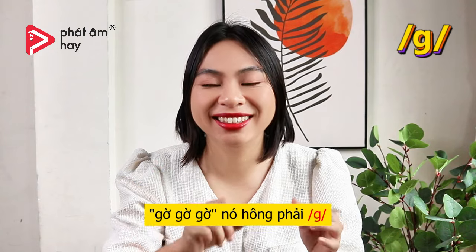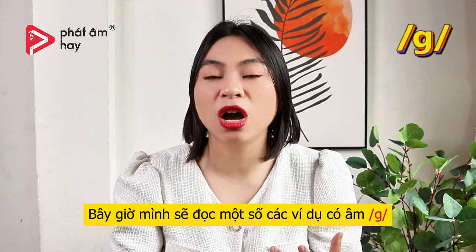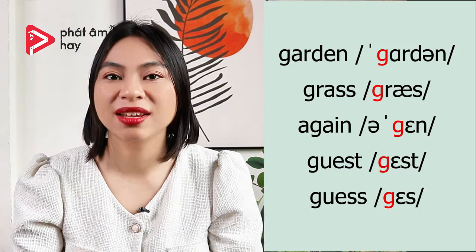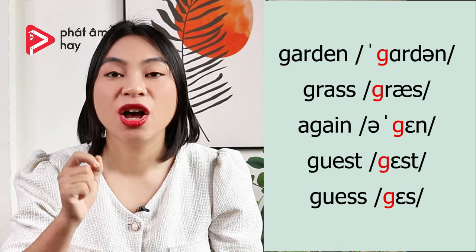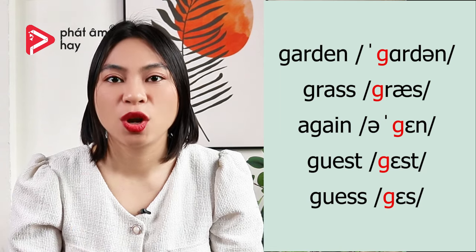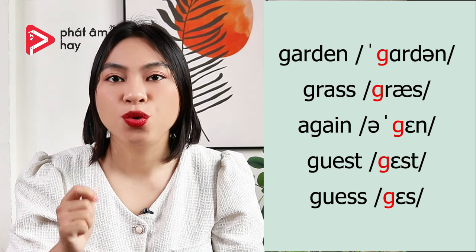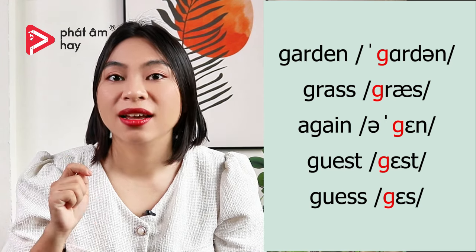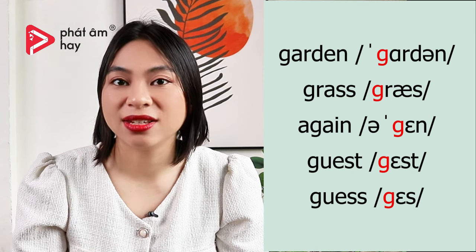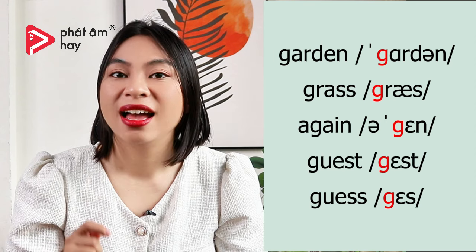Nó không phải G (Vietnamese style). Bây giờ mình sẽ đọc một số các ví dụ có âm G. Các bạn hãy nghe và lặp lại theo mình nha. Garden. Garden. Grass. Grass. Again. Again. Guest. Guest.